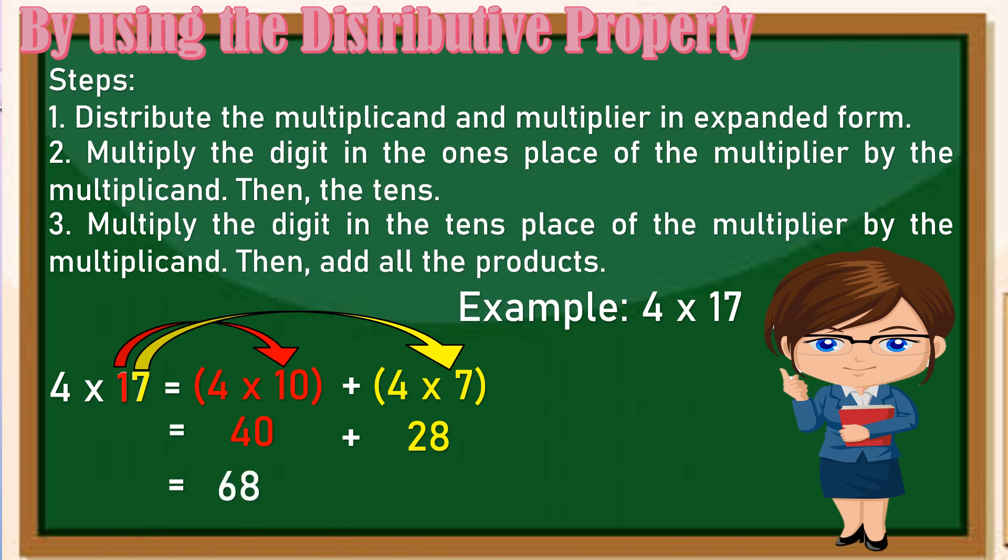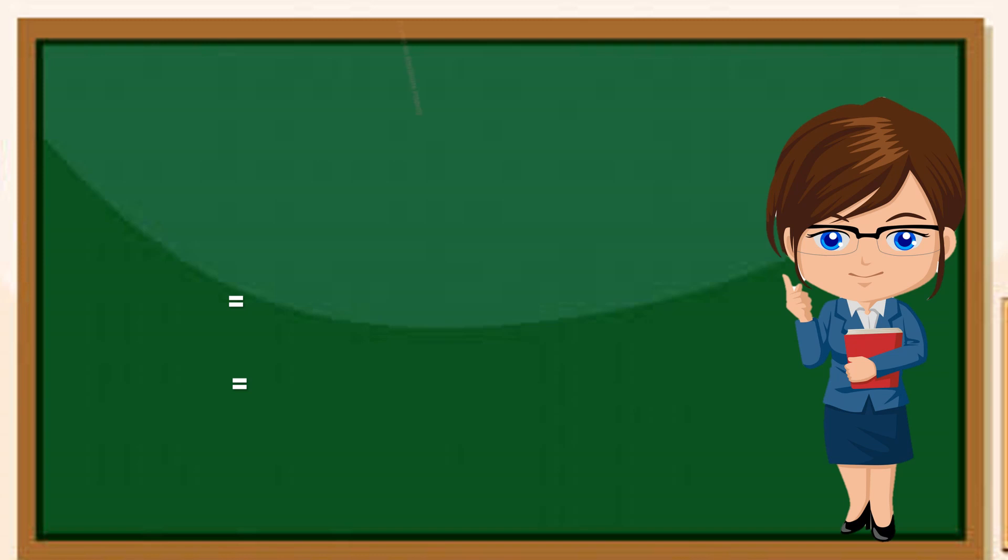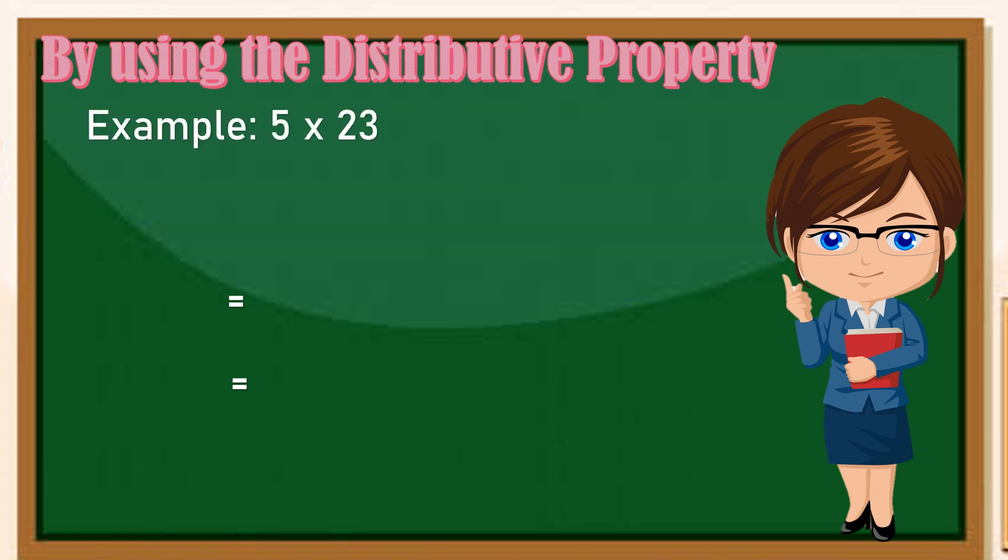Therefore 4 times 17 is 68. Next example using the distributive property is 5 times 23. Sundin lamang ang steps na nabanggit kanina at magiging madali ang pag-multiply mo. So distribute muna natin ang multiplicand at multiplier. Unahin natin ang 2. Since ang 2 ay nasa tens place, ang value nya ay 20, kaya 5 times 20. Then sunod natin ang naka ones place na 3, kaya magiging 5 times 3. Pagkatapos multiply natin sila.